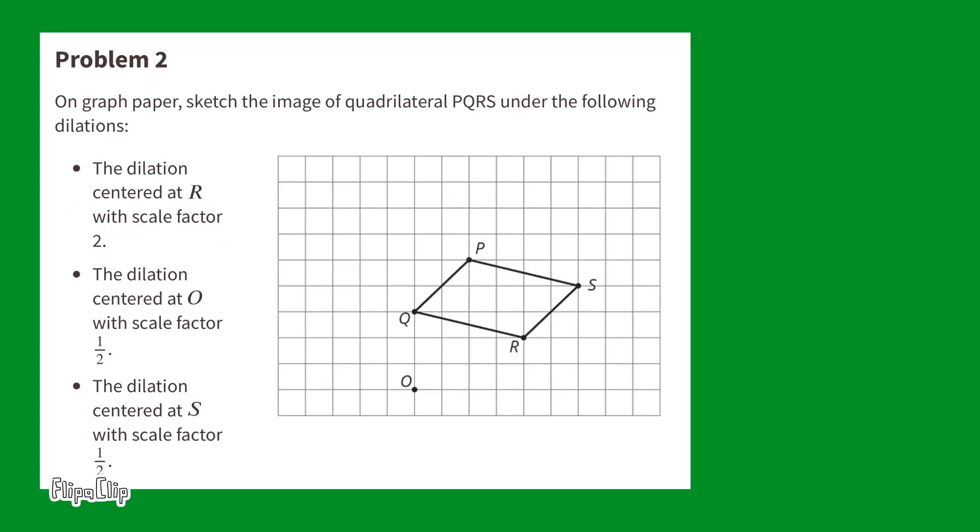Problem number 2. On graph paper, sketch the image of quadrilateral PQRS under the following dilations. The dilation centered at R with scale factor 2.